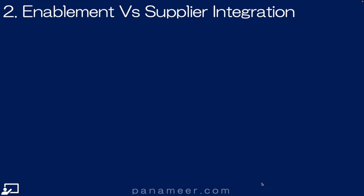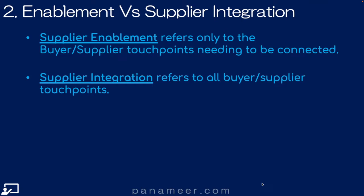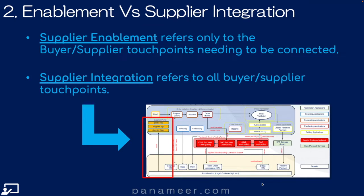Slide 2: Supplier Enablement versus Supplier Integration. Supplier enablement refers only to the buyer-supplier touchpoints needing to be connected, whereas supplier integration refers to all buyer-supplier touchpoints. For example, notice the supplier portal on the left — that's part of supplier integration, but it doesn't need to be connected, so it's not part of supplier enablement.